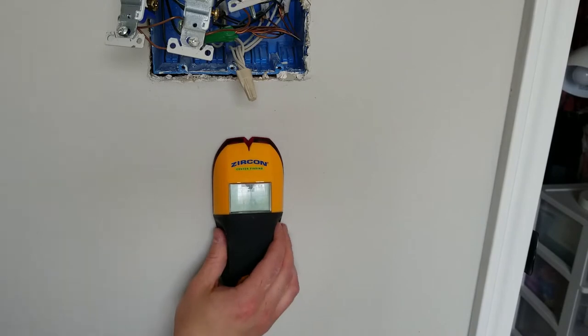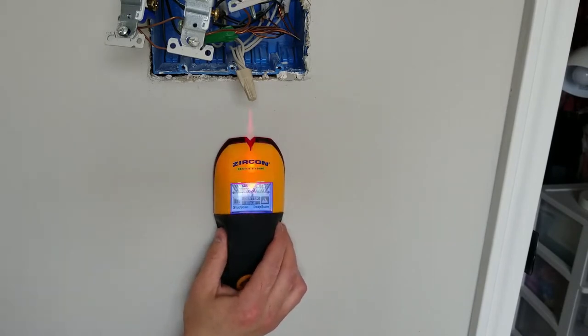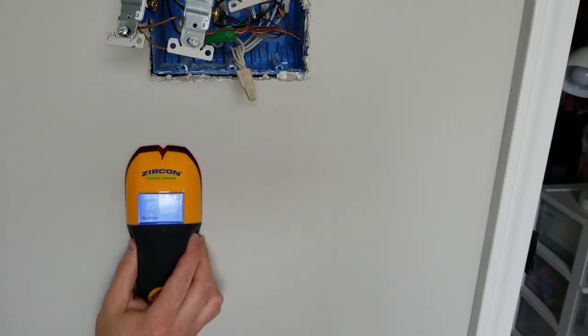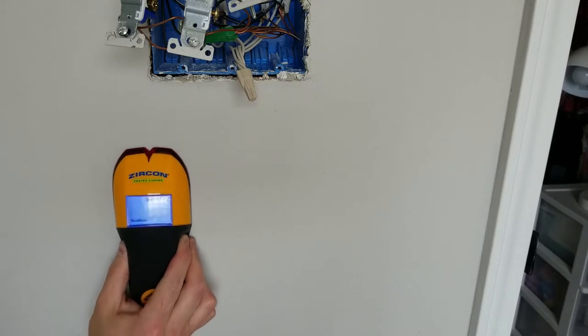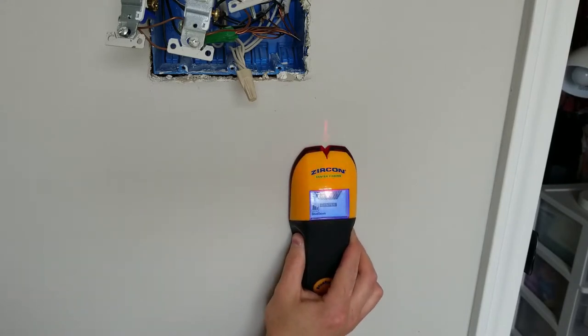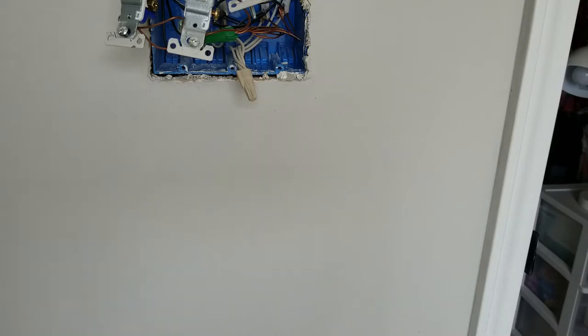So the switch box is going to be nailed to a stud. I'm going to use my stud finder to tell me which side the stud is on. The location of the stud will determine where I cut my opening in the drywall in the closet for my new outlet box.